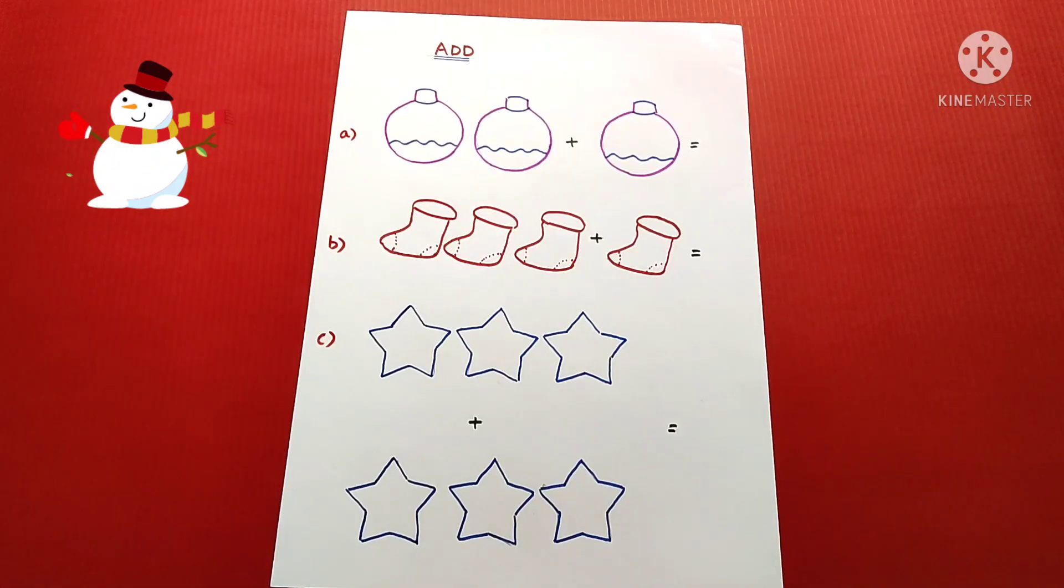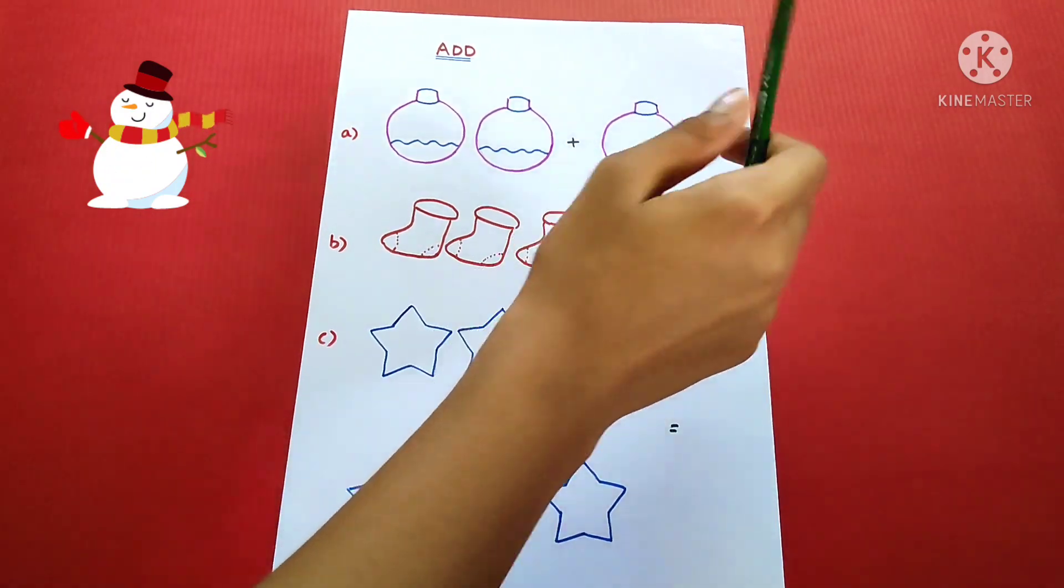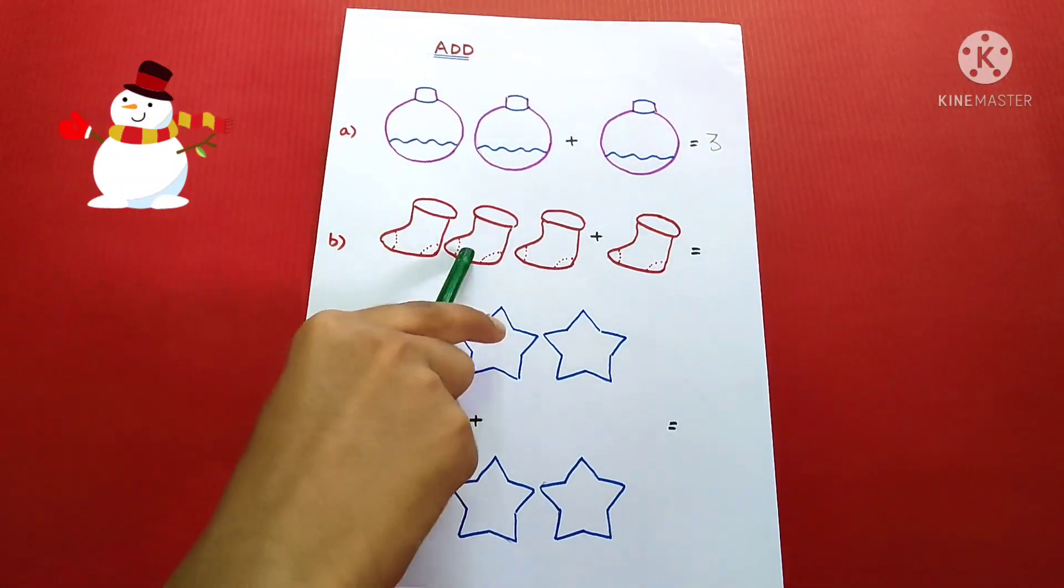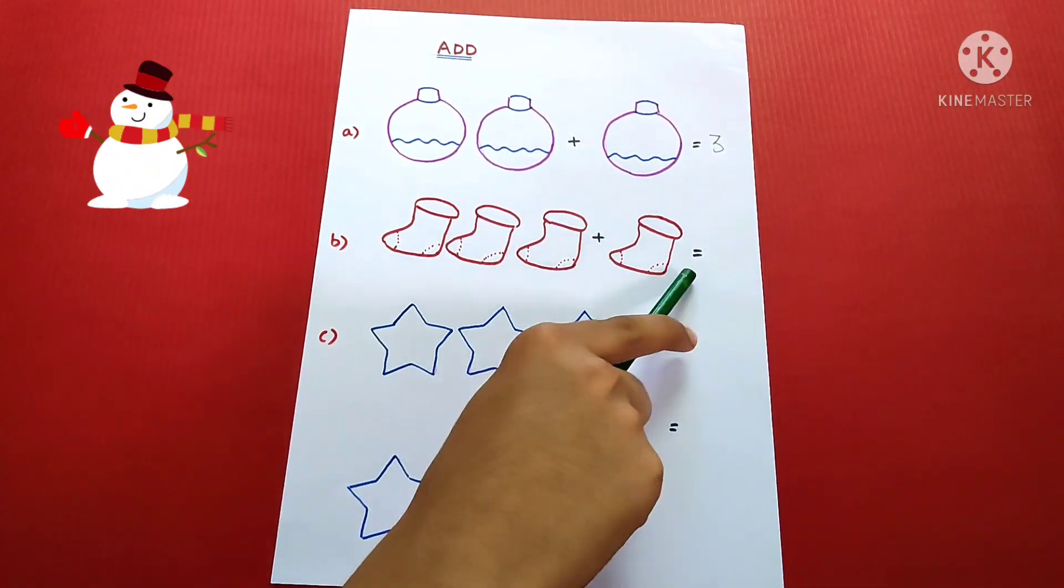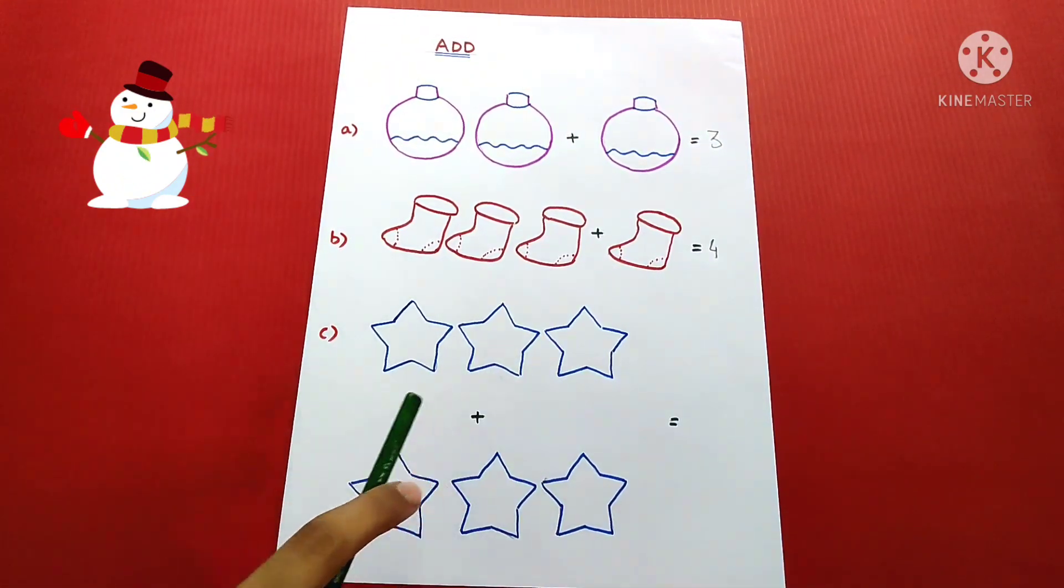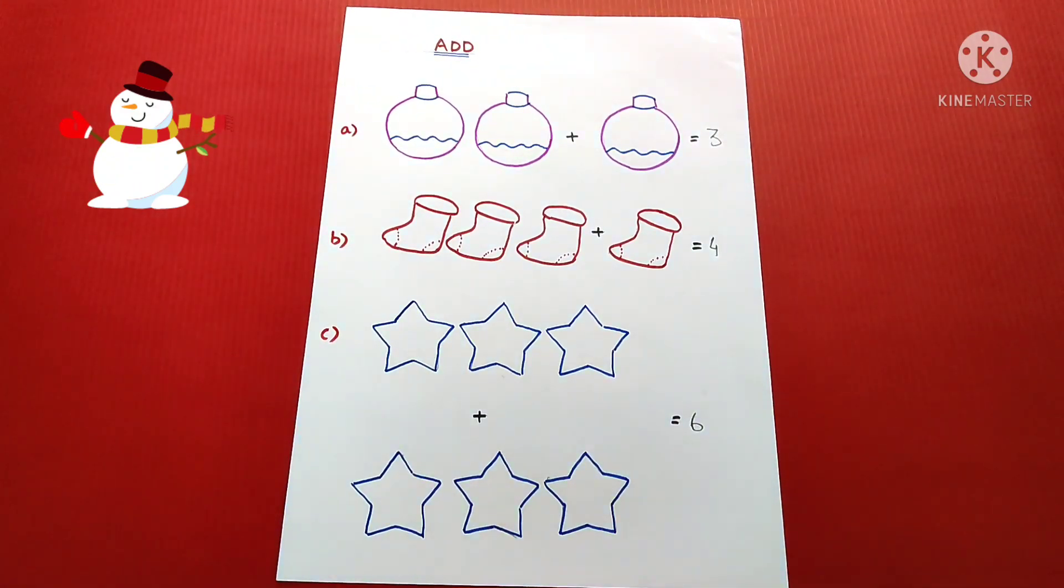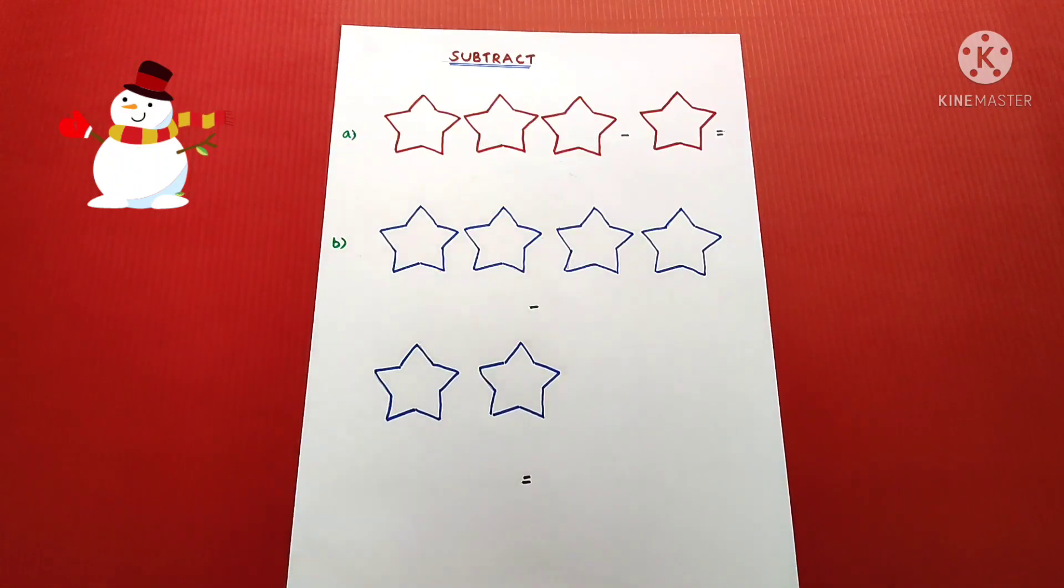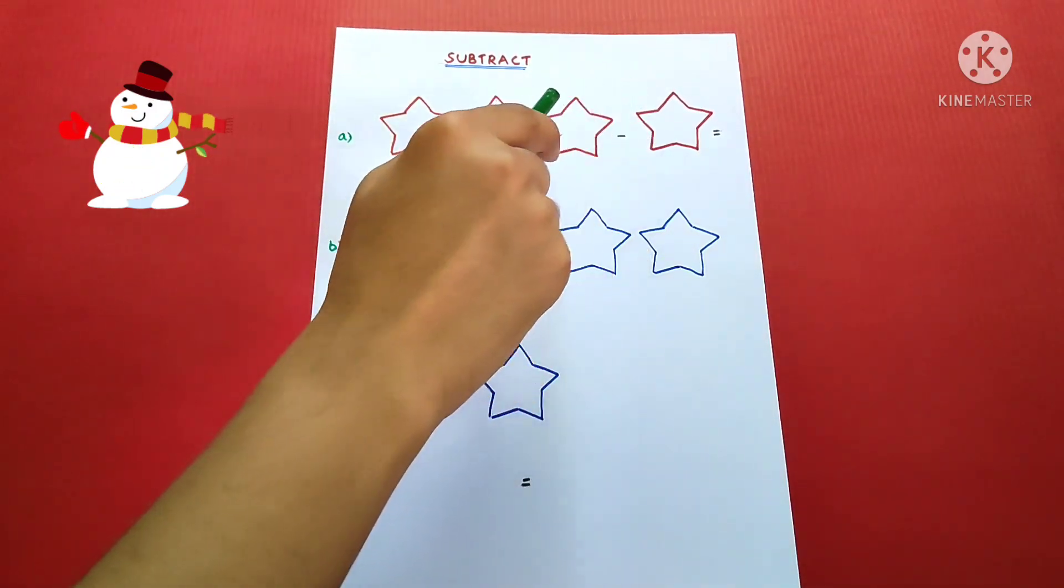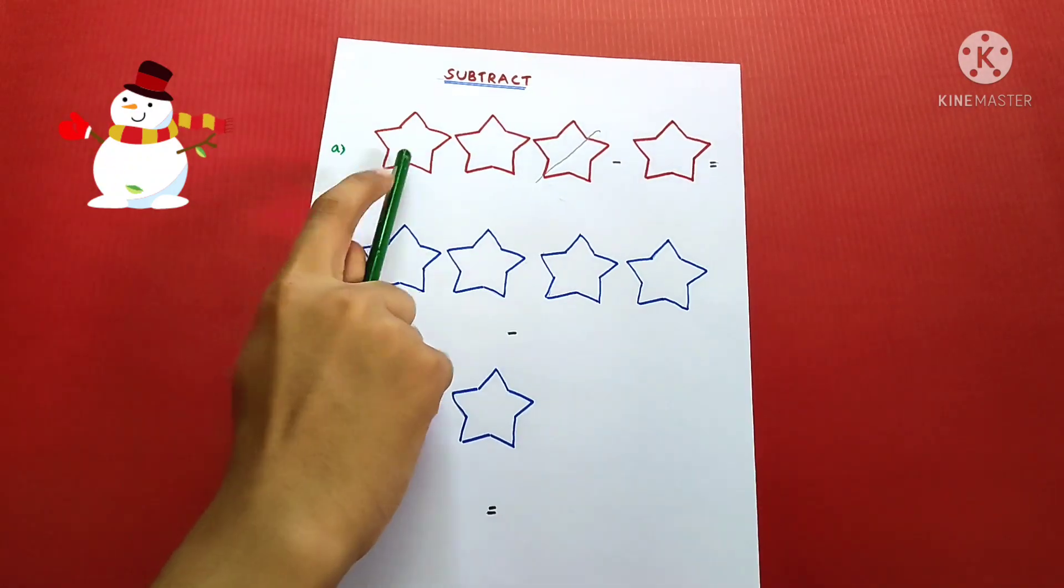Add. 2 plus 1 equals 3. 3 plus 1 equals 4. 3 plus 3 equals 6.